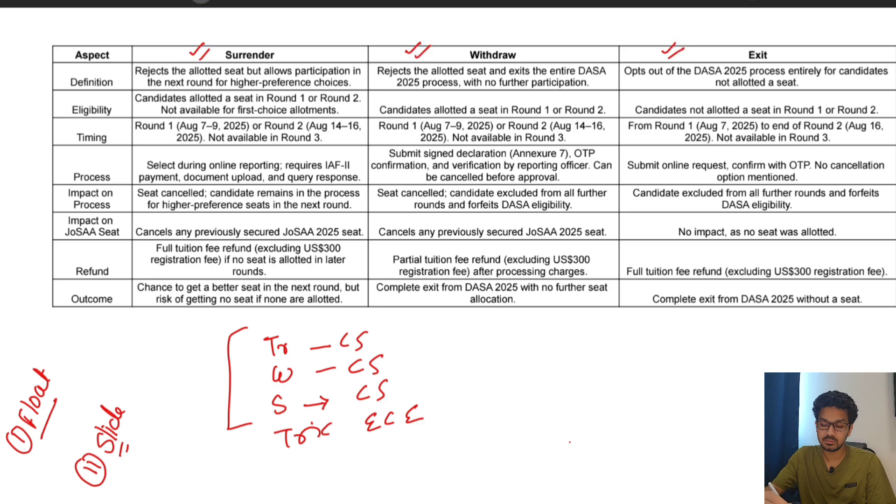Now we'll go to surrender, withdraw, and exit options. Surrender basically means suppose you got Trichy EC, but you are not at all happy with that particular branch and college. So you will go for the surrender option, and you will be participating in subsequent rounds. But now you don't have any college because you chose surrender. You lose the previous seat and you will get an upgrade as per your choice filling only. If you get an upgrade it's fine, otherwise you will not have any seats.